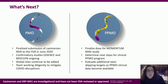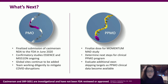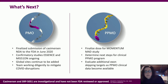What's next? We're excited that the NDA submission has been finalized with the FDA for casimersen, and about the confirmatory studies ESSENCE and MISSION. We are looking to expand our global sites — please continue to check ClinicalTrials.gov as it updates in real time. Our team is working very diligently to mitigate any disruptions that COVID may cause to patient dosing or data collection. We're also excited about our PPMO program: finalizing our dose with MOMENTUM and evaluating additional exon skipping targets.